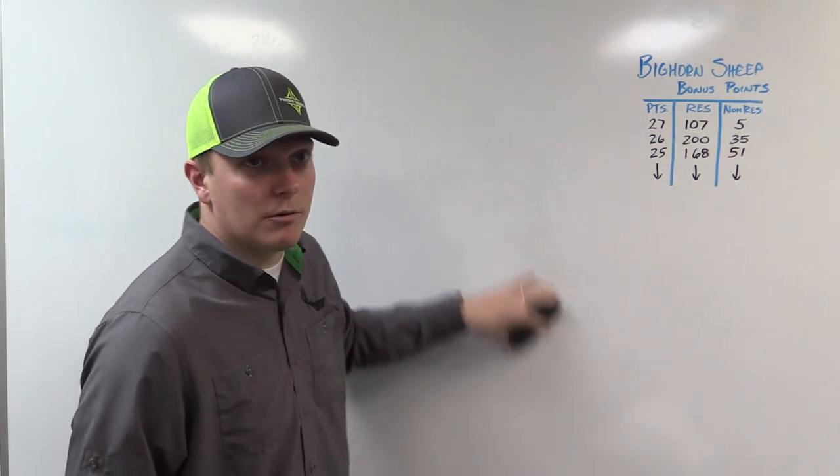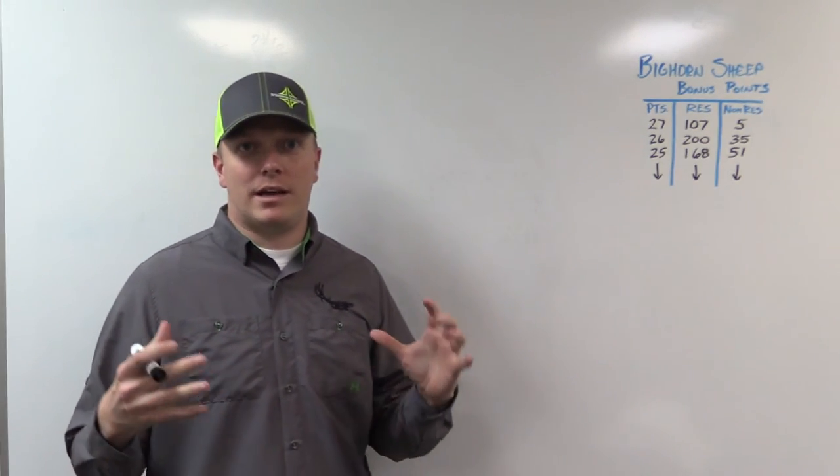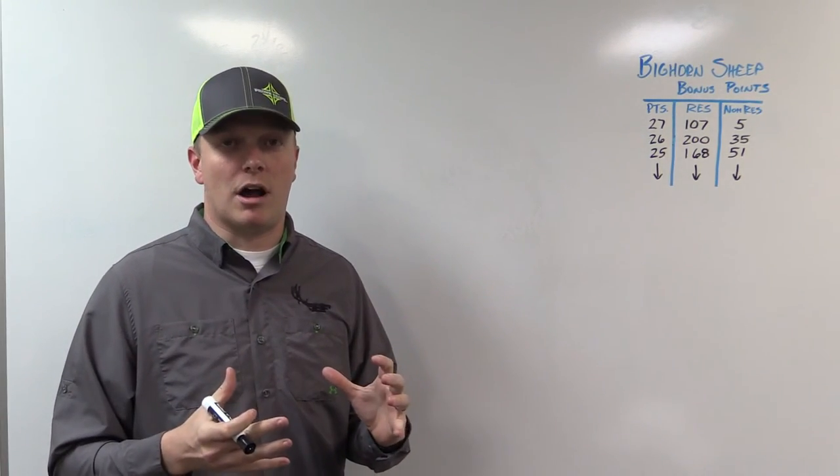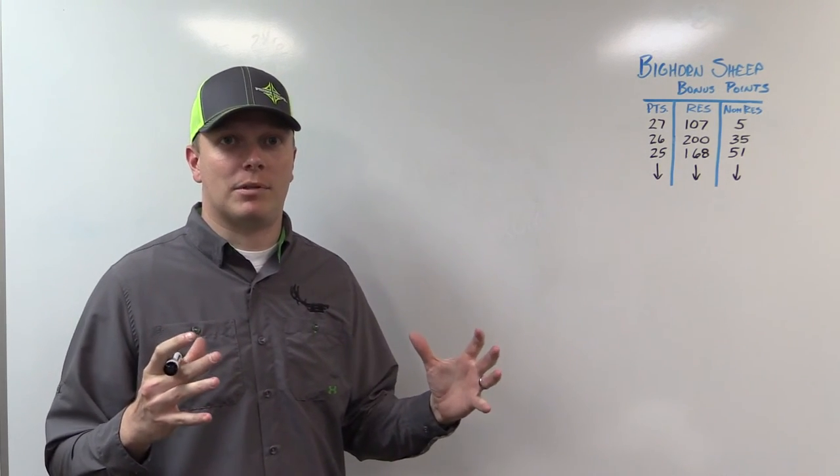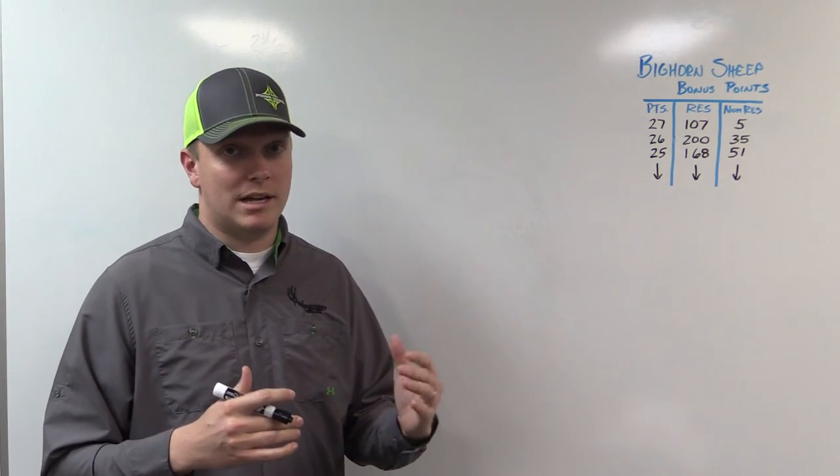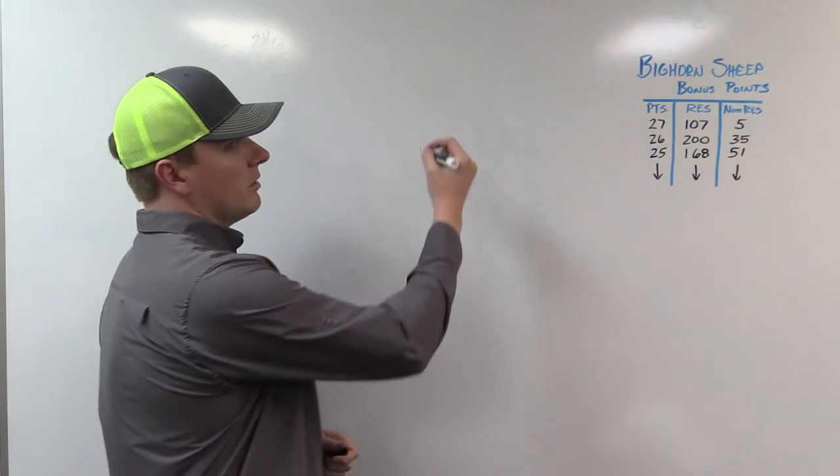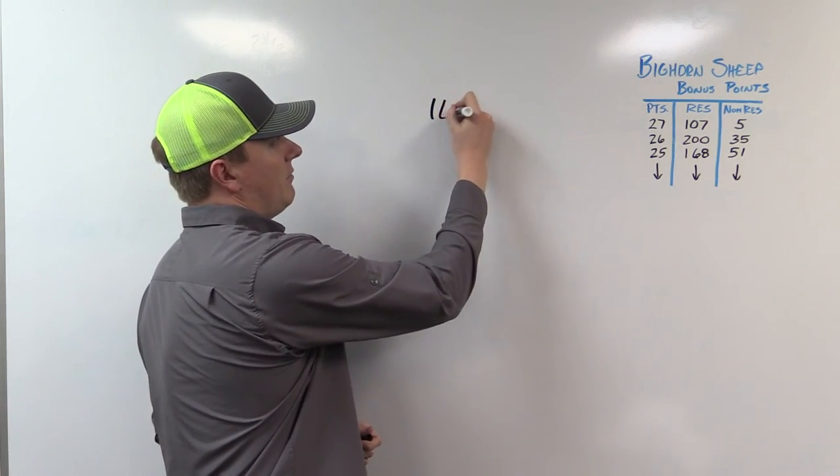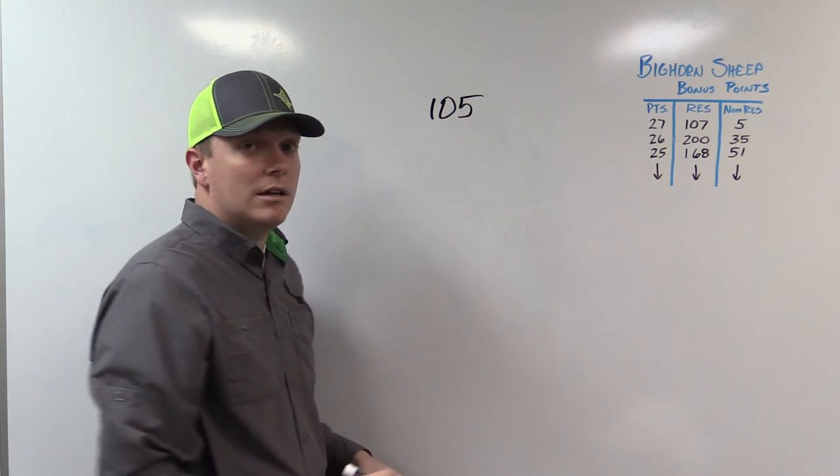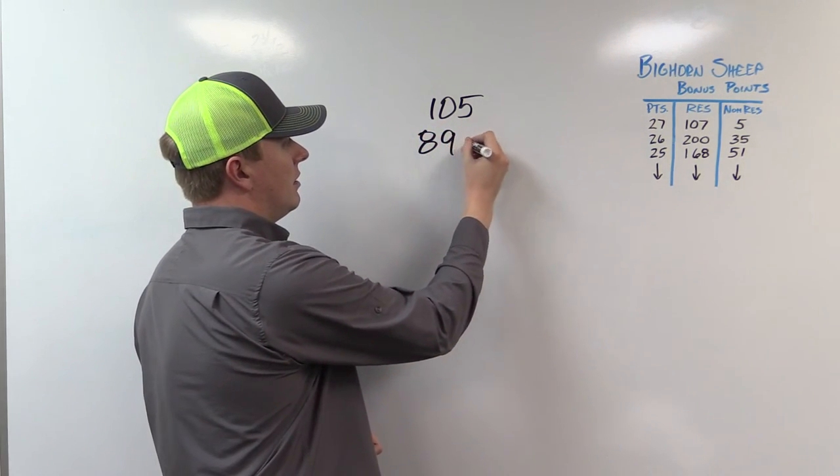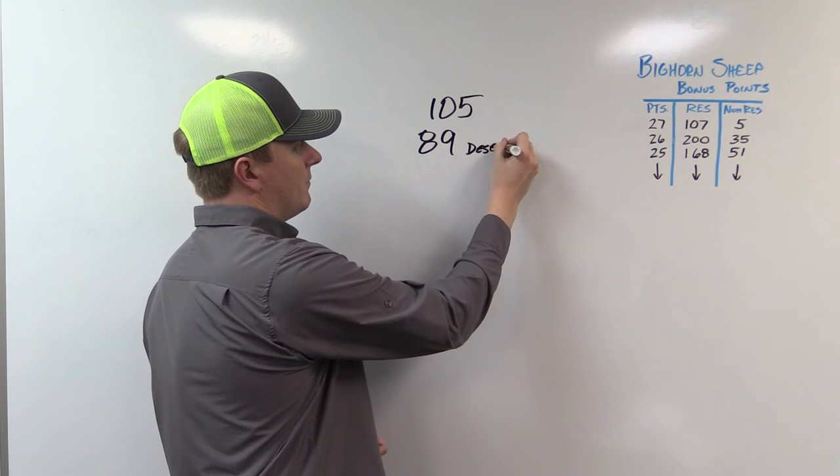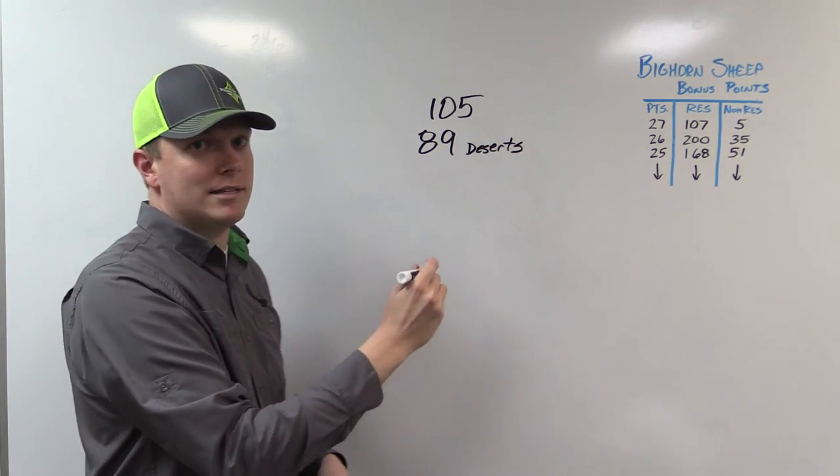We'll start with sheep. Bighorn sheep are lumped together in just a species draw, not per hunt. They essentially will look at all applicants that have applied for sheep, deserts and Rockies. So this year there's 105 sheep tags total. That's a breakdown of 89 deserts and 16 Rockies.